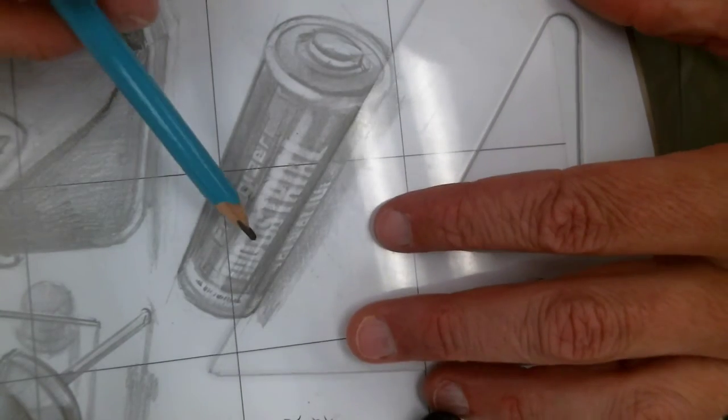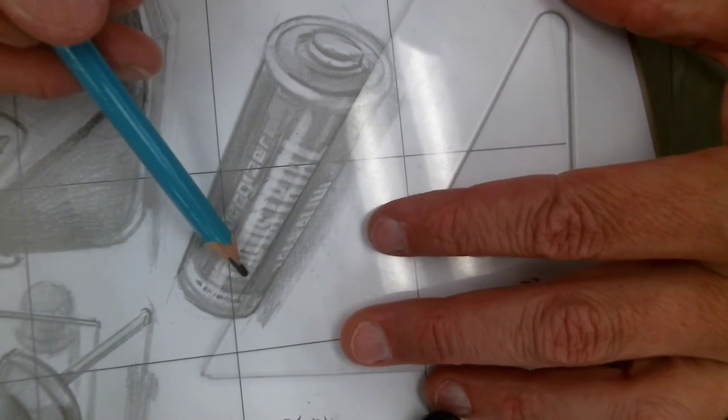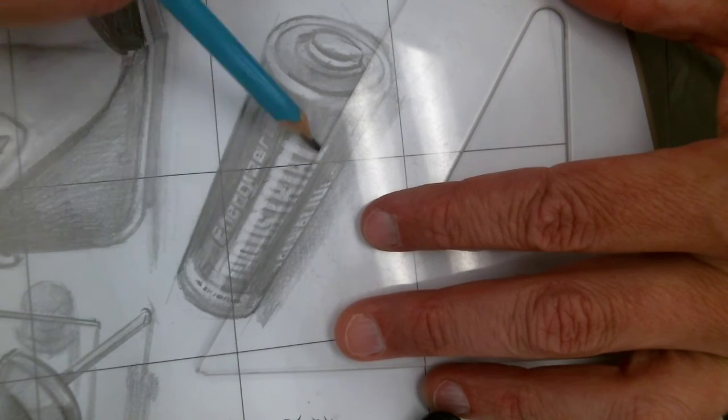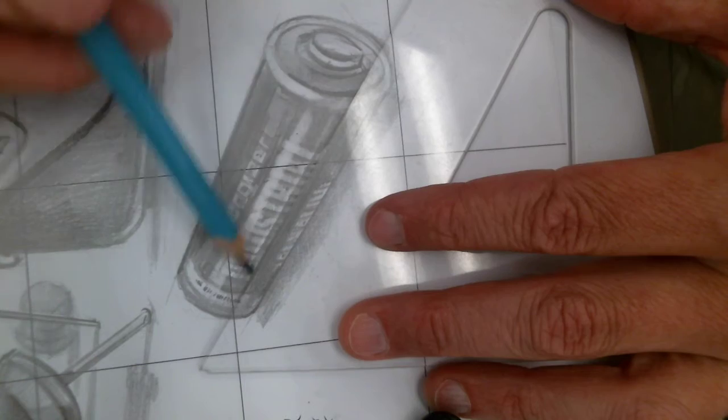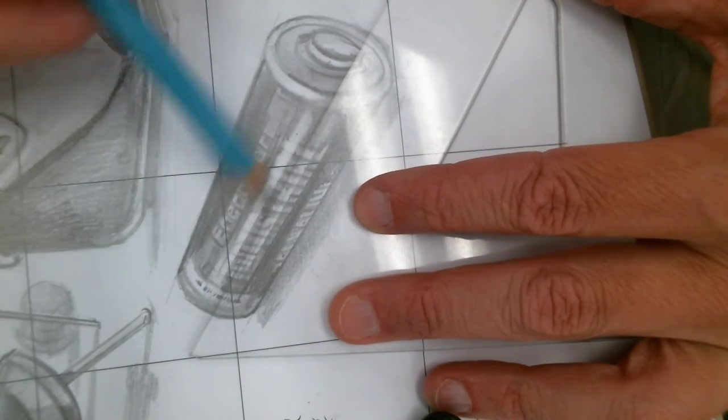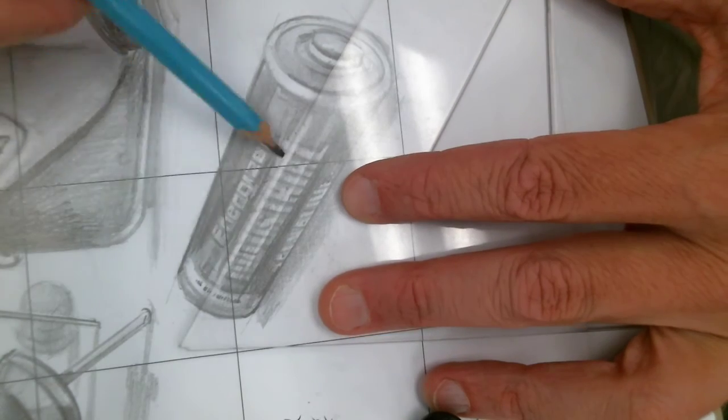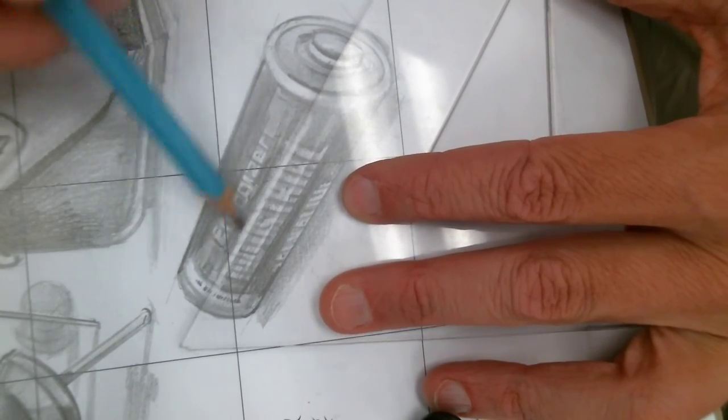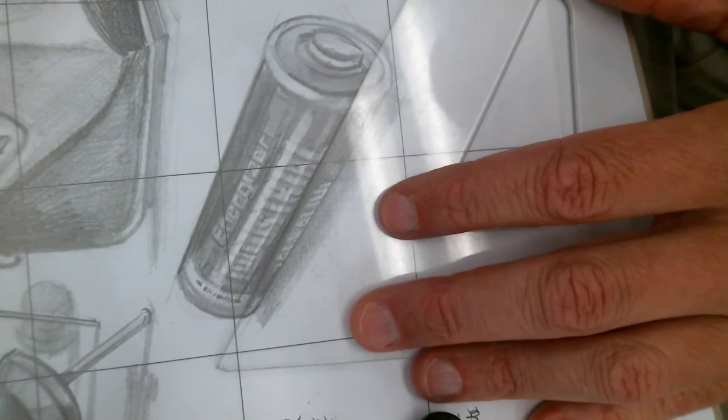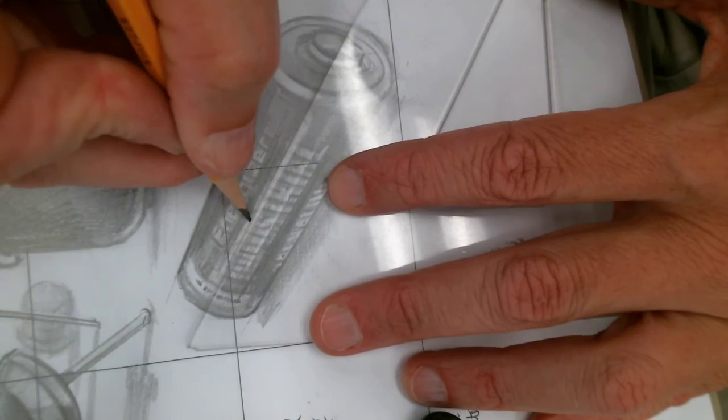And then once you find that highlight you can go back in with the value. You can kind of see a darker shadow, and just pick that up a little bit. And if it took off too much you can just go back in and touch it up here a little bit.